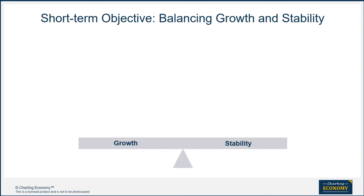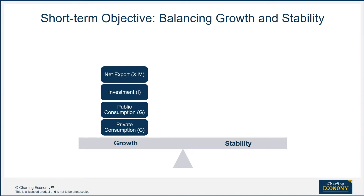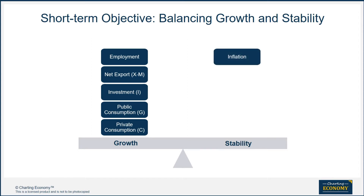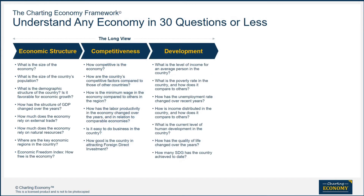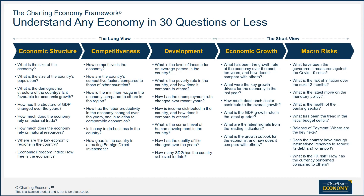The short-term objective of economic policy makers is to balance growth and stability. They can stimulate growth through these four engines on the expenditure side: private consumption, public consumption, investment, and net export. Increasing employment is usually the immediate target for short-term growth stimulus policies. On the other side, policy makers have to watch out for inflation and other macroeconomic stability issues, such as the financial system's health, fiscal health, balance of payment, and the exchange rate. As spectators, we ask questions about these issues and only pick relevant indicators that help answer them.